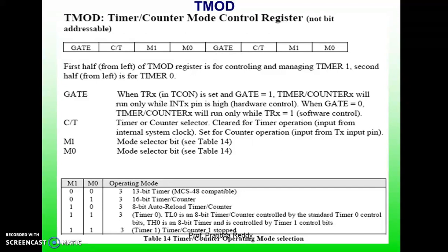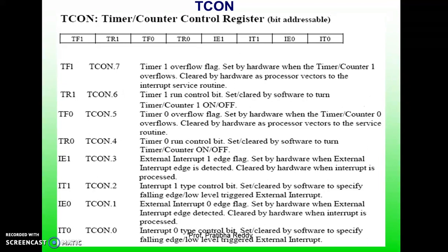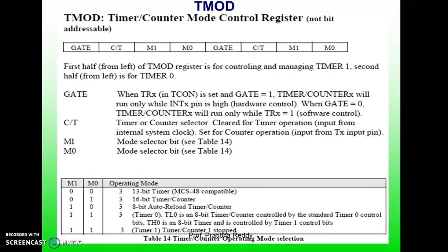Coming to the discussion of the TMOD register: the first bit is GATE. When GATE is set, the timer or counter is enabled only when the INTx pin is high and the TRx control pin is set, which is present in the TCON register. When cleared, the timer is enabled whenever the TRx control bit is set. The C/T-bar bit specifies whether to use the timer or counter operation. If enabled, it means we are using the timer; if disabled, we are using the counter. It also contains two mode bits M1 and M0, giving 4 possible combinations: 00, 01, 10, and 11.